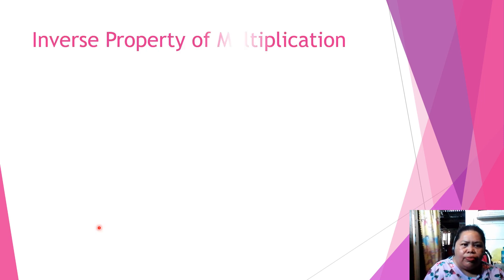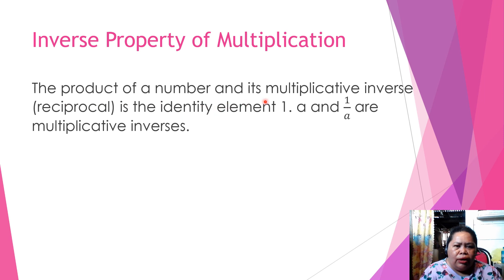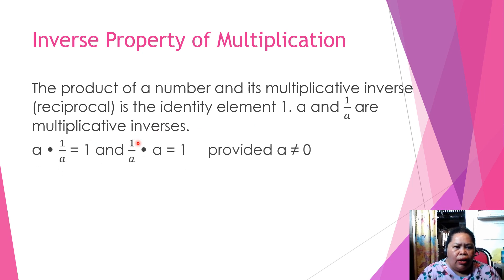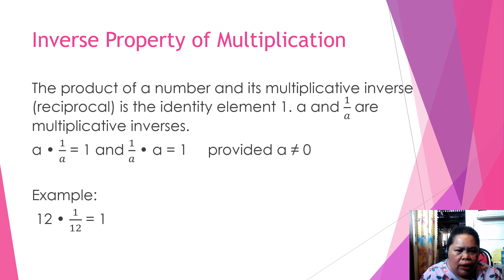We have inverse property of multiplication. The product of a number and its multiplicative inverse or reciprocal is the identity element 1. A and 1 over A are multiplicative inverses. A times 1 over A is equal to 1. And 1 over A times A is equal to 1, provided that A is not equal to 0. For example, 12 times 1 over 12 is equal to 1. You just cancel this out.